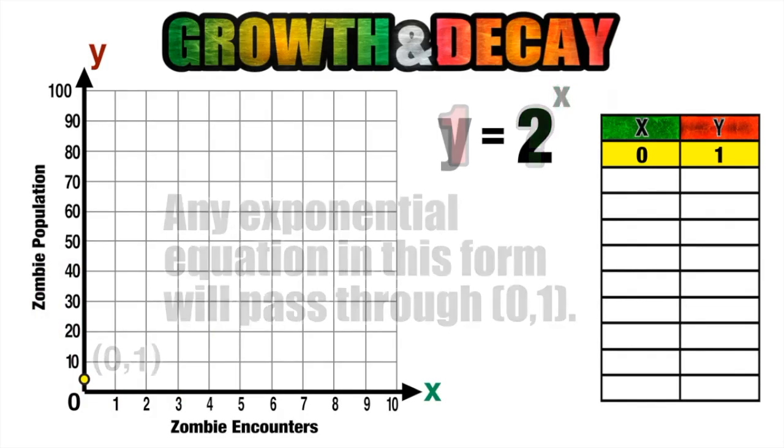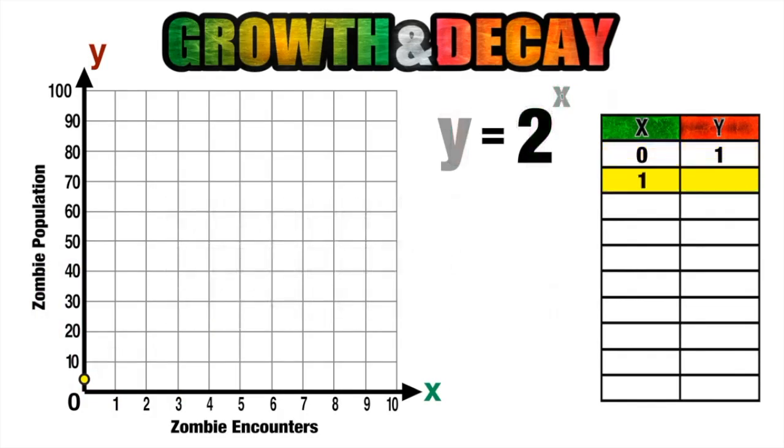So once that initial zombie has his first encounter with a human, our population grows to two. After our second encounter, our population grows to four.